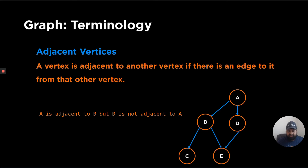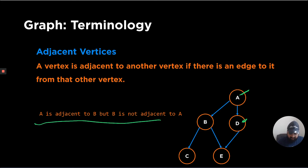Next are adjacent vertices. A vertex is called adjacent to another vertex if there is an edge from one vertex to another. For example, A is adjacent to B because we can go to B from A. But the vice versa is not true in a directed graph — B is not adjacent to A because we cannot reach A from B.